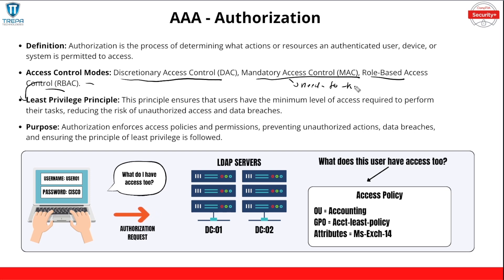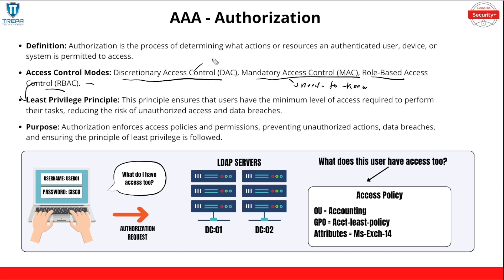Mandatory access control is based on need-to-know. If you have an R&D department developing IP and copyrights, accounting or HR staff have no need to know that sensitive information — that's mandatory access control. Discretionary access control is actually the default Windows access control method: whoever owns the data sets the permissions. For example, if I create a new folder on my desktop, I set those permissions. All these access control modes can be used together in an enterprise.